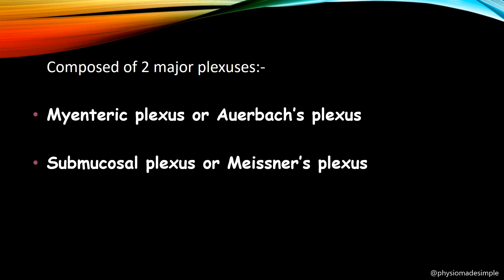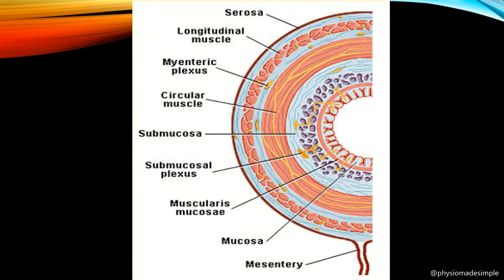Looking at the visual diagram: the outermost layer is the serosa — a brown-colored single layer. Then comes the longitudinal muscles, then the circular muscles. The myenteric plexus is located between the longitudinal and circular muscle layers — these are the nerve dots visible between those two muscle layers. Then comes the submucosal layer, and the innermost layer is the mucosal layer.